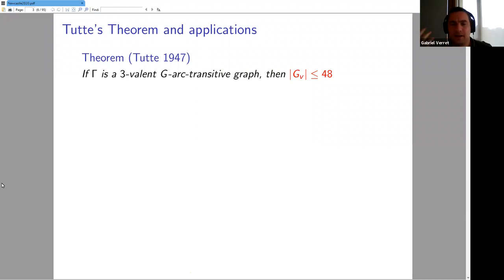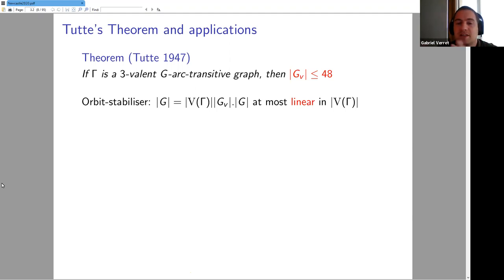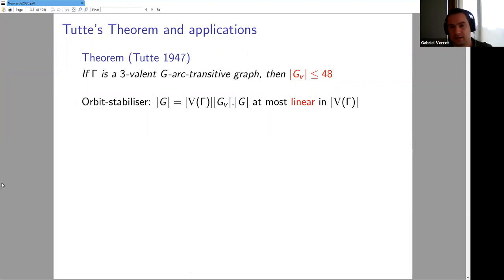Let me start with the oldest result in this area — there were almost no other important results for a few decades — but it's still very important. This is due to Tutt. If you have a 3-valent GR-transitive graph, then the order of the stabilizer G_v is at most 48. So it's bounded by a constant; it cannot be too big. This has many implications.